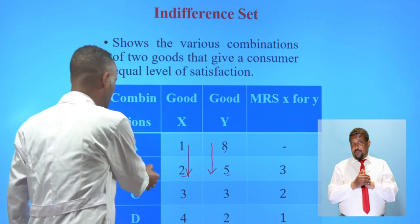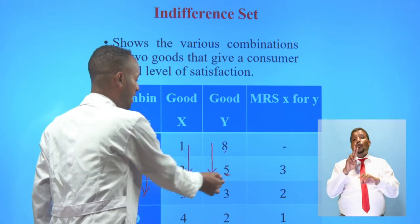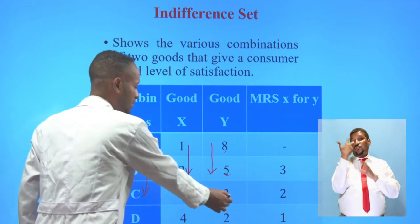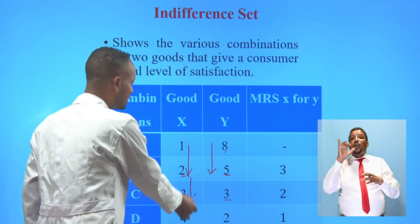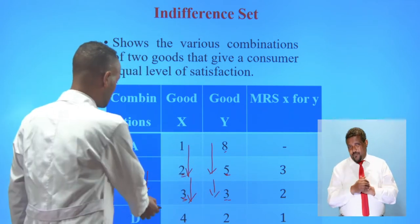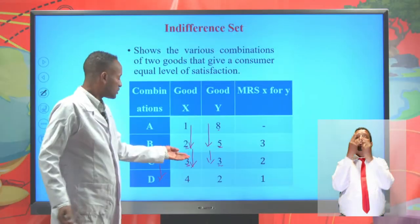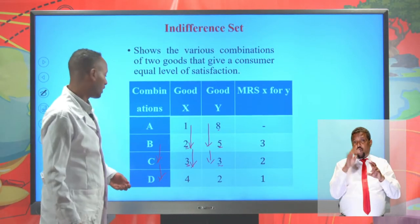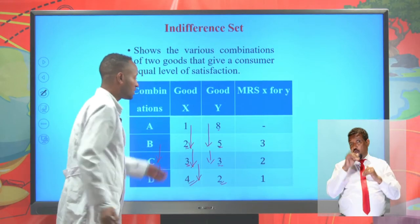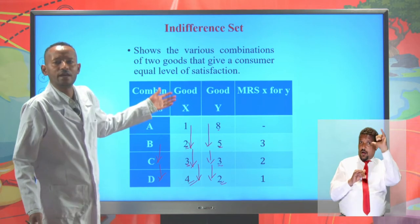When we go from combination B to C, the satisfaction from two units of X and five units of Y is equal to that from three units of X and three units of Y, because as we increase consumption of good X, we decline consumption of good Y. When we come from combination C to D, the satisfaction from three units of X and three units of Y equals that from four units of X and two units of Y. In each case, the consumer will be indifferent.